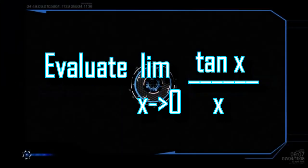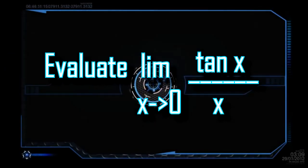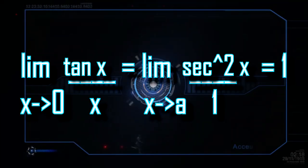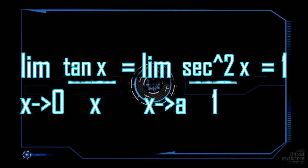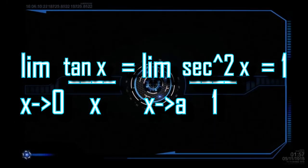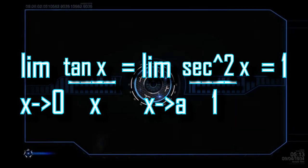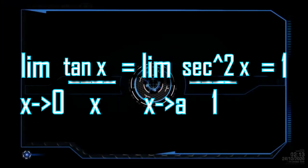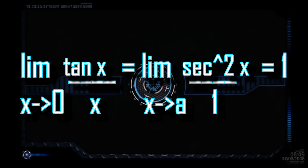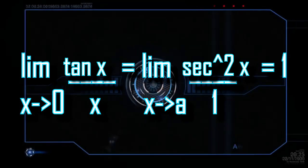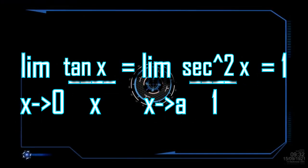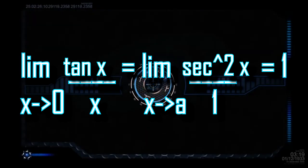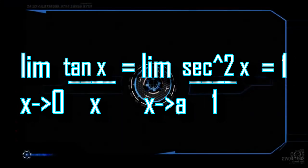Let's try to evaluate the limit of tan(x) over x as it approaches 0. Substituting would result in 0 over 0. Thus, we use L'Hôpital's rule and get the derivatives. The derivative of tan(x) is sec²(x), while the derivative of x is 1. Substituting 0 for x makes sec²(x) equal to 1. With that, the answer is 1.